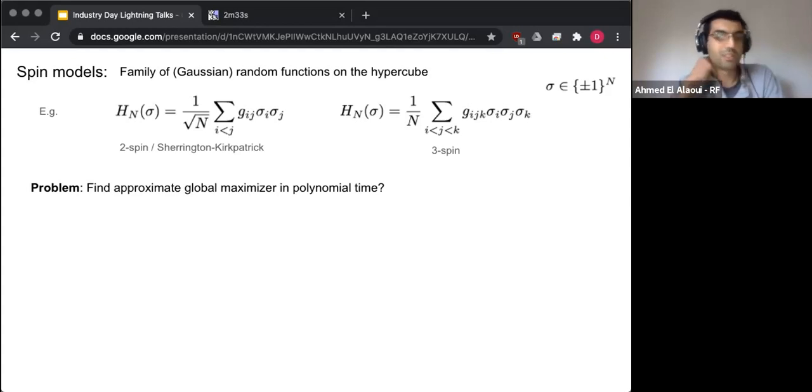So let me define these models that come from physics. They're called spin models. And these are very roughly speaking families of Gaussian random functions on the hypercube plus minus one to the power n. So these are just two examples that I showed you here.